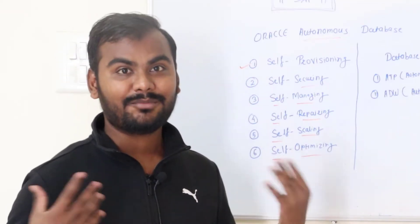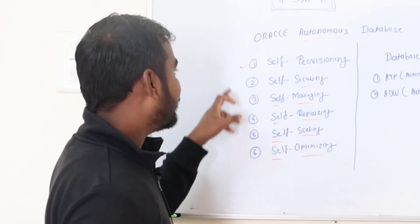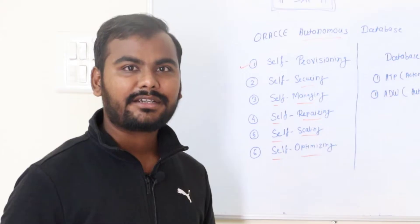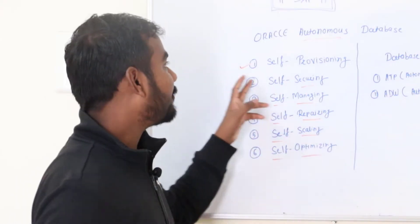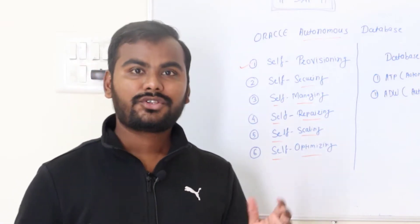Self means I am the one who doesn't require anyone. So this is a database who is doing most of the activities by himself only. Because of that only we are calling it as Oracle Autonomous Database.